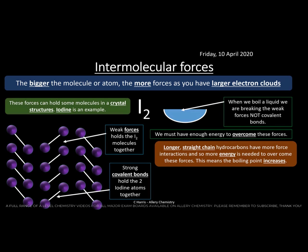Hydrocarbons — substances containing only carbon and hydrogen — illustrate this well. The longer the chain, the more energy is needed to overcome the forces between molecules, so they have a higher boiling point. For example, petrol has about five to seven carbons and is a liquid, whereas methane has only one carbon and is a gas at room temperature. This is all to do with the forces between the molecules.